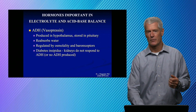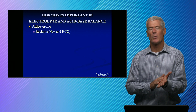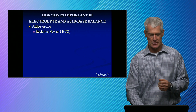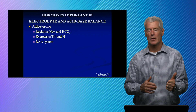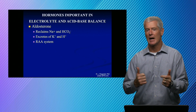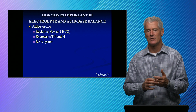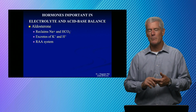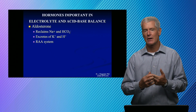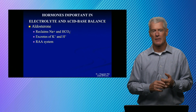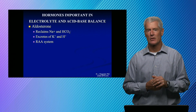The other key hormone is aldosterone, which is important in many disease states. Aldosterone does four things: it reabsorbs sodium and bicarbonate, and excretes potassium and hydrogen ions. If you remember those four things, you can figure out what happens in Conn's syndrome, Cushing's disease, and primary aldosteronism. Too much aldosterone causes metabolic alkalosis with hypokalemia — that all follows logically from those four functions.